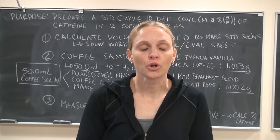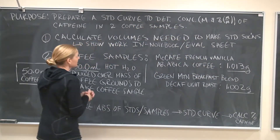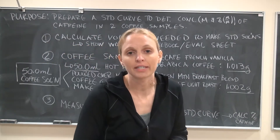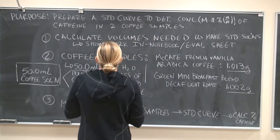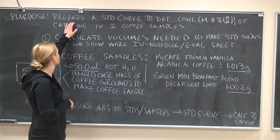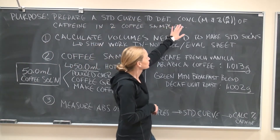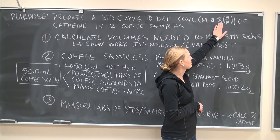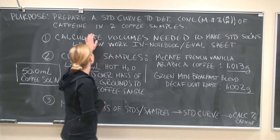The objective of the lab is I'm giving you two coffee samples and we're going to figure out the concentration of caffeine in the coffee. The purpose listed in the lab manual is you're going to prepare a standard curve, make a graph, and determine the concentration in molarity and in mass percent — that's mass over mass — of caffeine in two different coffee samples.